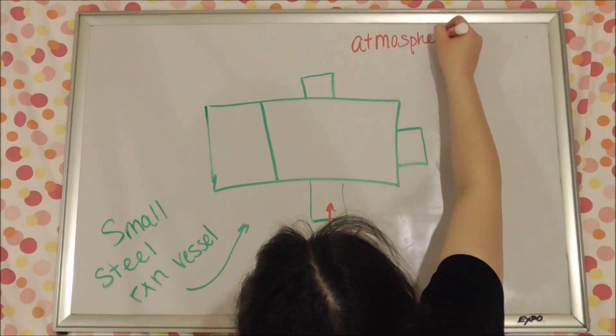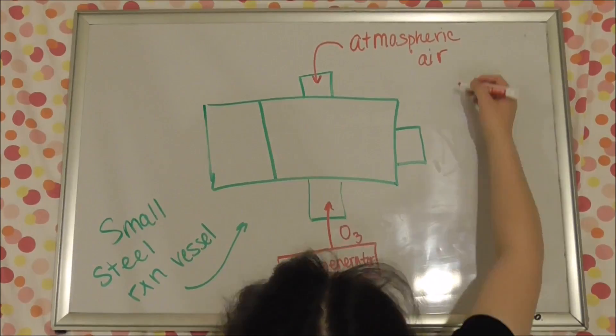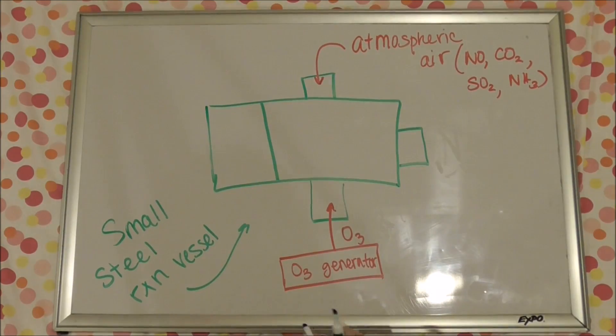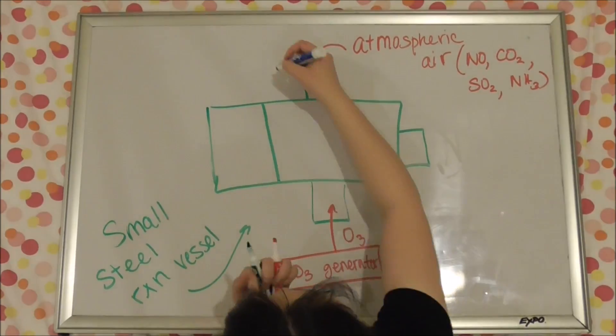At the top, it allows atmospheric air to flow in, including NO, CO2, SO2, and even stuff like NH3.